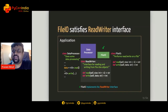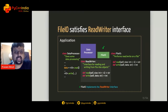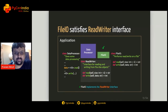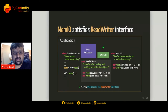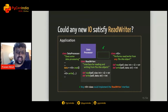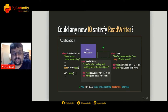If we express this relationship as code, we could define a completely new class — let's call it ReadWriter — and define read and write methods inside it with no implementation whatsoever, just empty methods. This represents an interface: an empty class which only defines what methods need to exist. It serves as a blueprint for classes like FileIO and MemIO. We can say that FileIO satisfies the ReadWriter interface, and similarly MemIO also satisfies it.